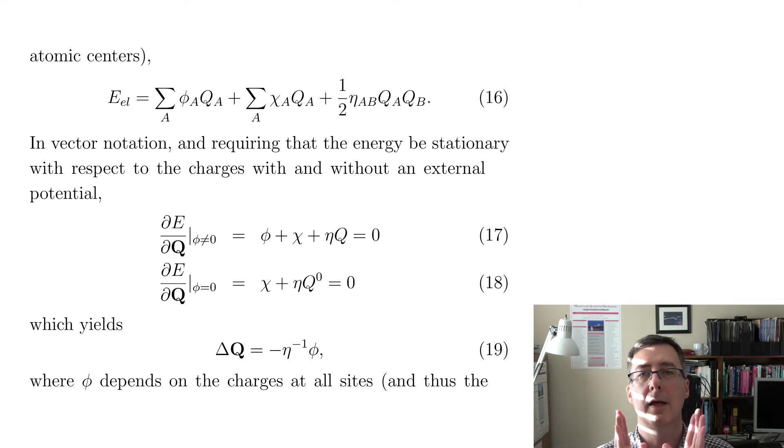Then you want to apply a variational principle and minimize the energy with respect to the charges, both with external potential and without, so phi not equal to 0 in equation 17 and phi equal to 0 in equation 18. And glossing over the details, you get kind of a simple looking equation that tells you what the change delta in the charges is on the molecules, on the atoms, delta Q, and it's just equal to however big the external potential is phi times negative the inverse of this chemical hardness. And that you could solve.